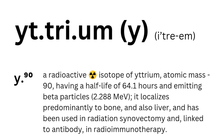Yttrium-90 is a radioactive isotope, atomic mass 90, having a half-life of 64.1 hours and emitting beta particles at 2.288 MeV. It localizes predominantly to bone, and also liver, and has been used in radiation synovectomy and, linked to antibody, in radioimmunotherapy.